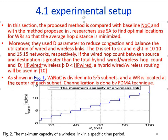In this figure, the maximum capacity of the wireless link in a specific time period is shown. The wireless network on chip is divided into 5x5 subnets and the wireless router is located at the center of each subnet. Channelization is done by the FDMA technique.